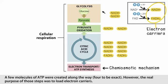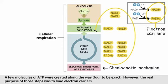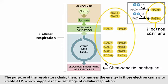A few molecules of ATP were created along the way — four to be exact. However, the real purpose of those steps was to load electron carriers. The purpose of the respiratory chain, then, is to harness the energy in those electron carriers to create ATP, which happens in the last stage of cellular respiration.